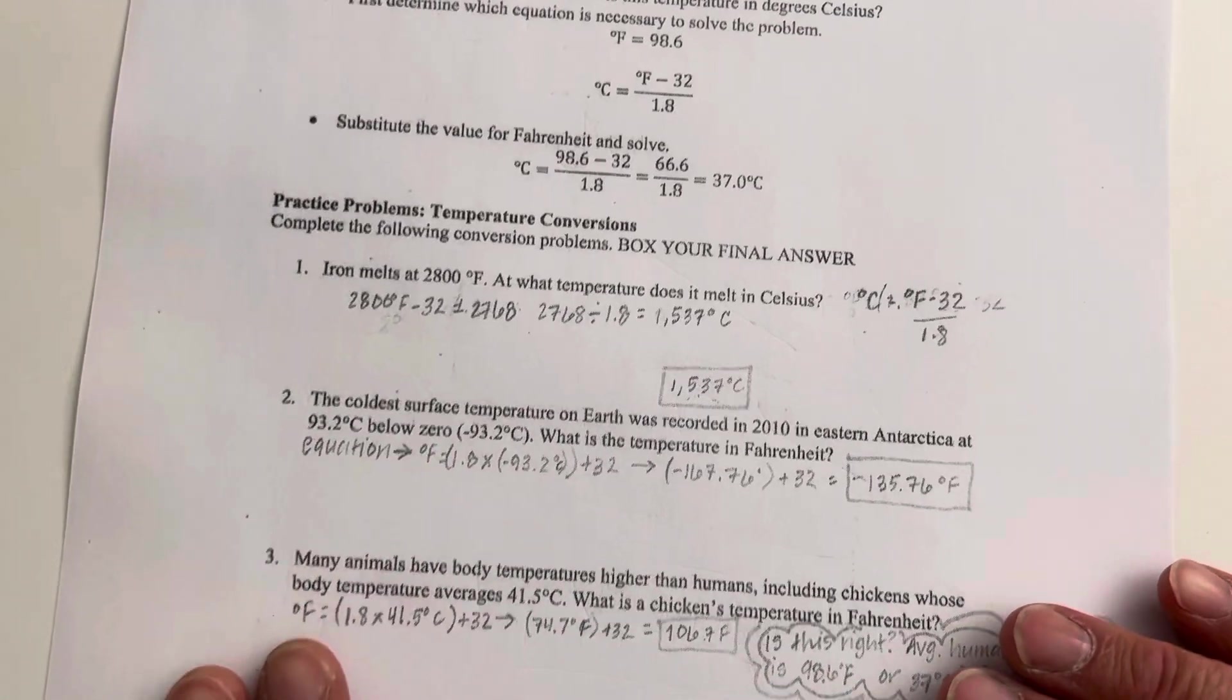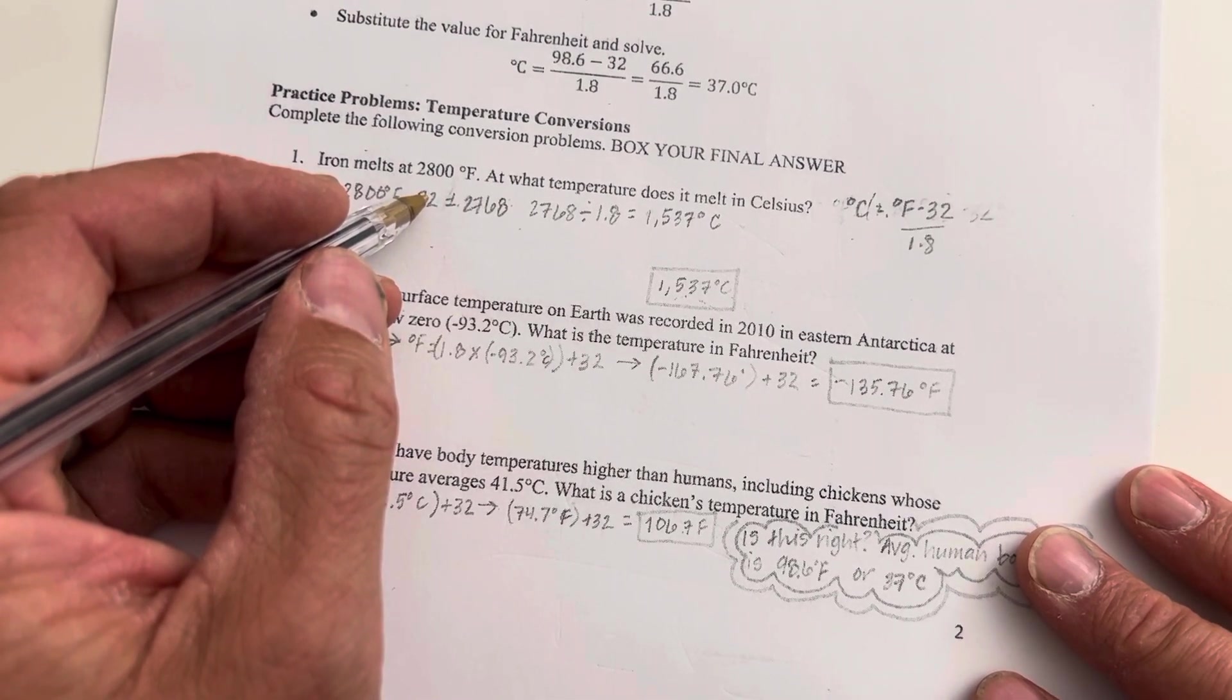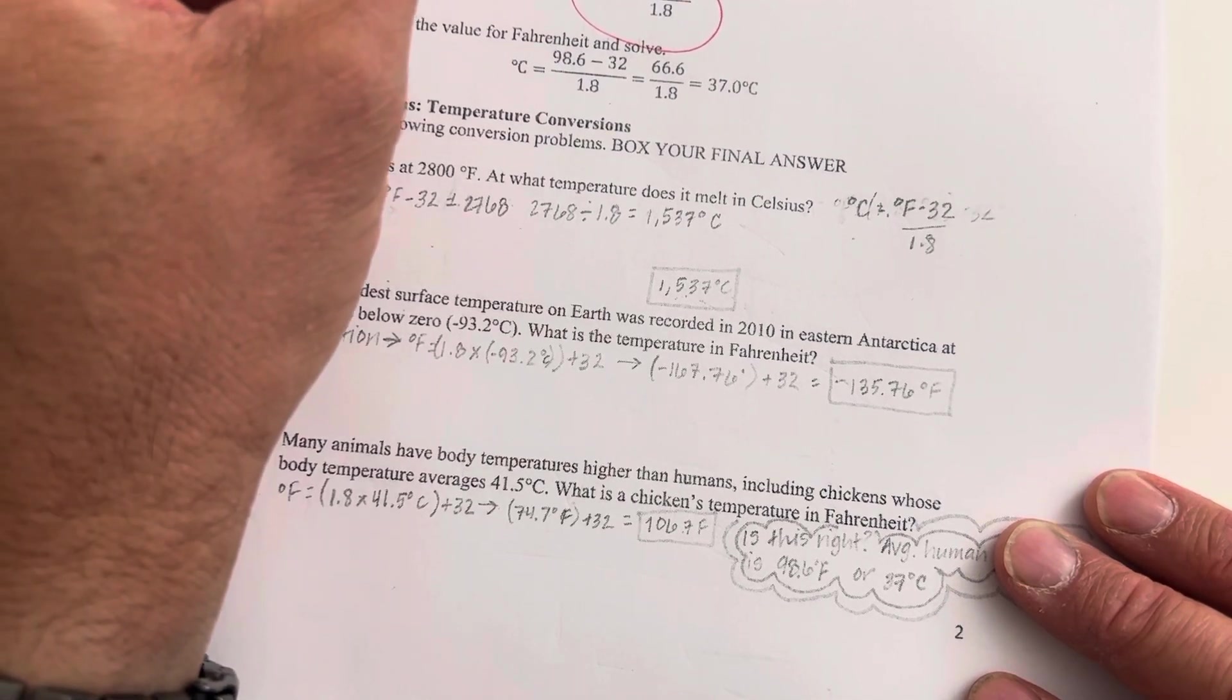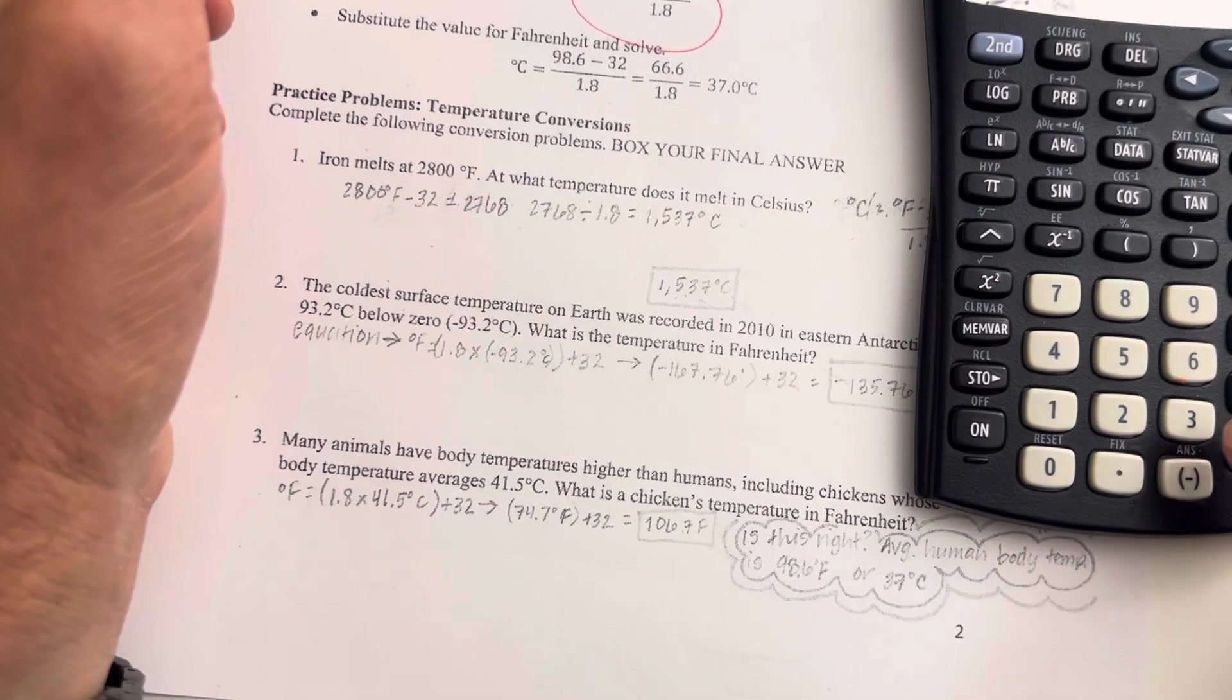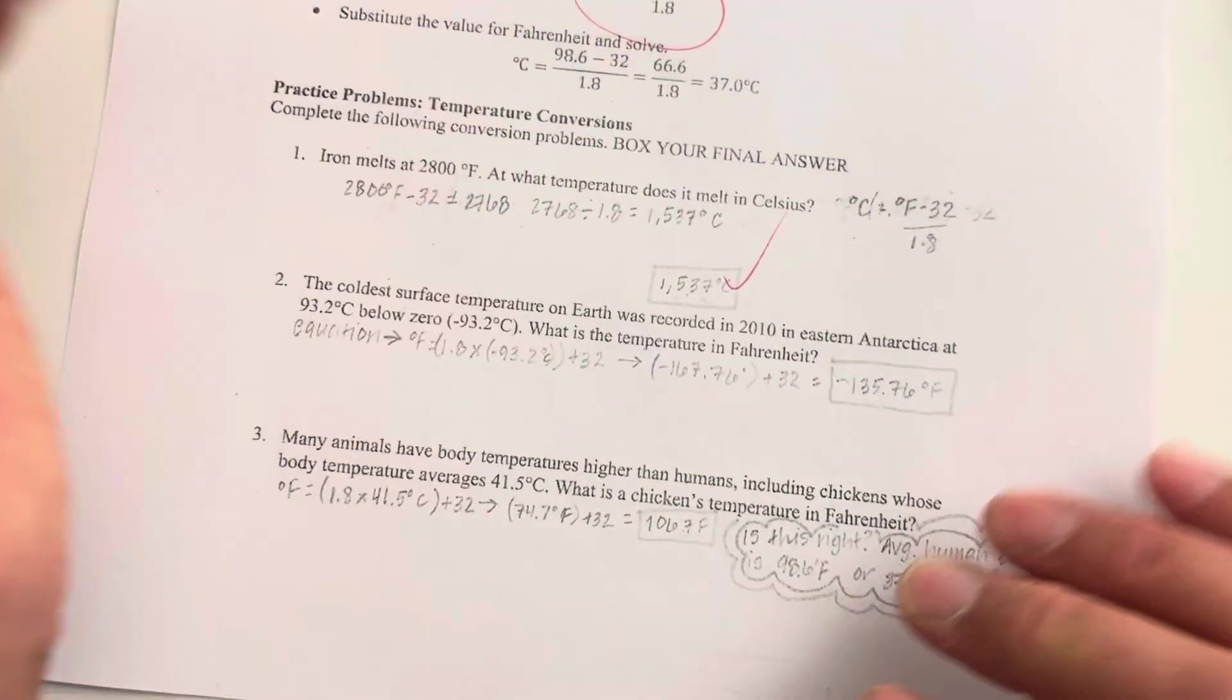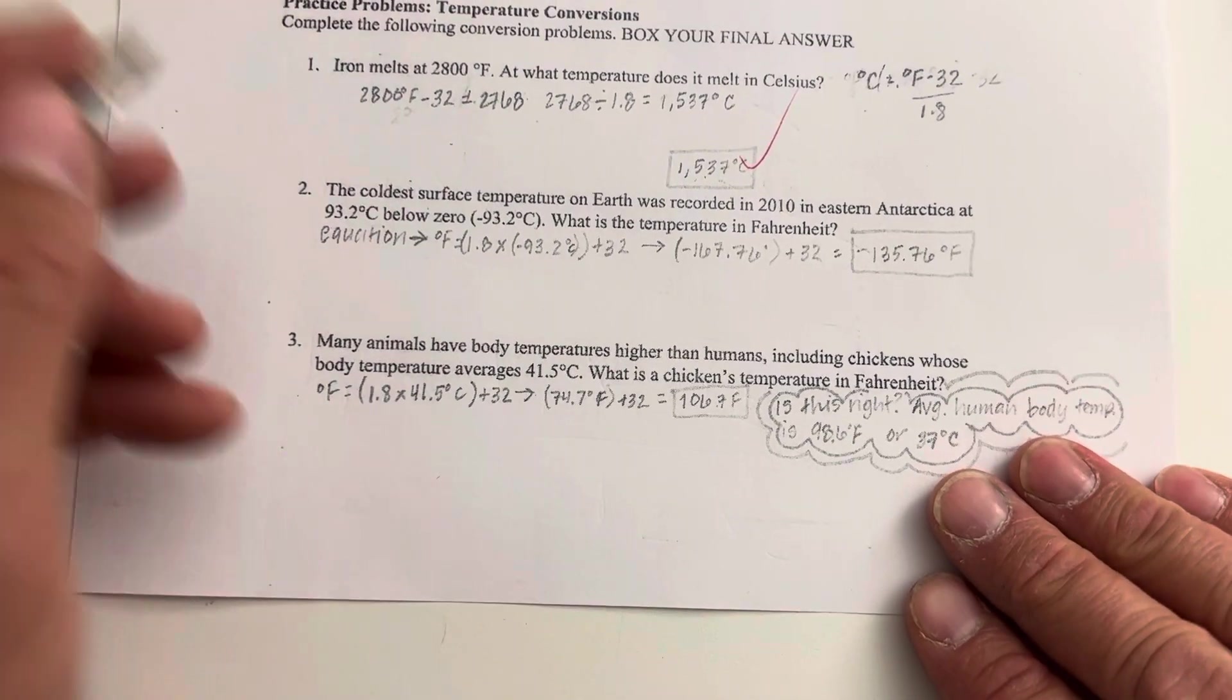So with the conversion factors for temperature here. The first one, we have 2800 degrees Fahrenheit, and we're trying to convert that into Celsius. So we're going to use this formula here. We're going to say 2800 subtract 32, and then divide all that by 1.8. So if we take 2800, subtract 32, divide all that by 1.8, we end up with the answer that you have. The sig figs are a little bit - I guess there's an issue with the sig figs. We can talk about that later in class, but the answer is generally correct.